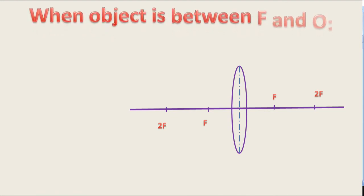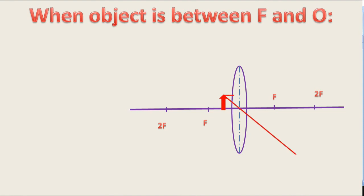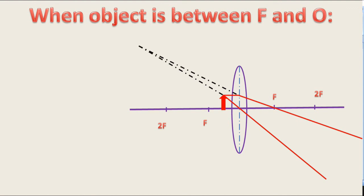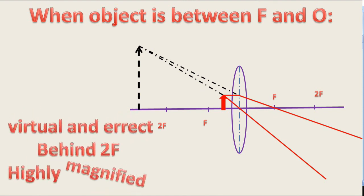When the object is between F and O, the rays of light coming from the object pass through the lens and diverge — they seem to come from behind the object. Therefore a virtual image is formed. The nature of the image is virtual and erect, and it is highly magnified. The image is virtual because it is formed on the same side as the object.